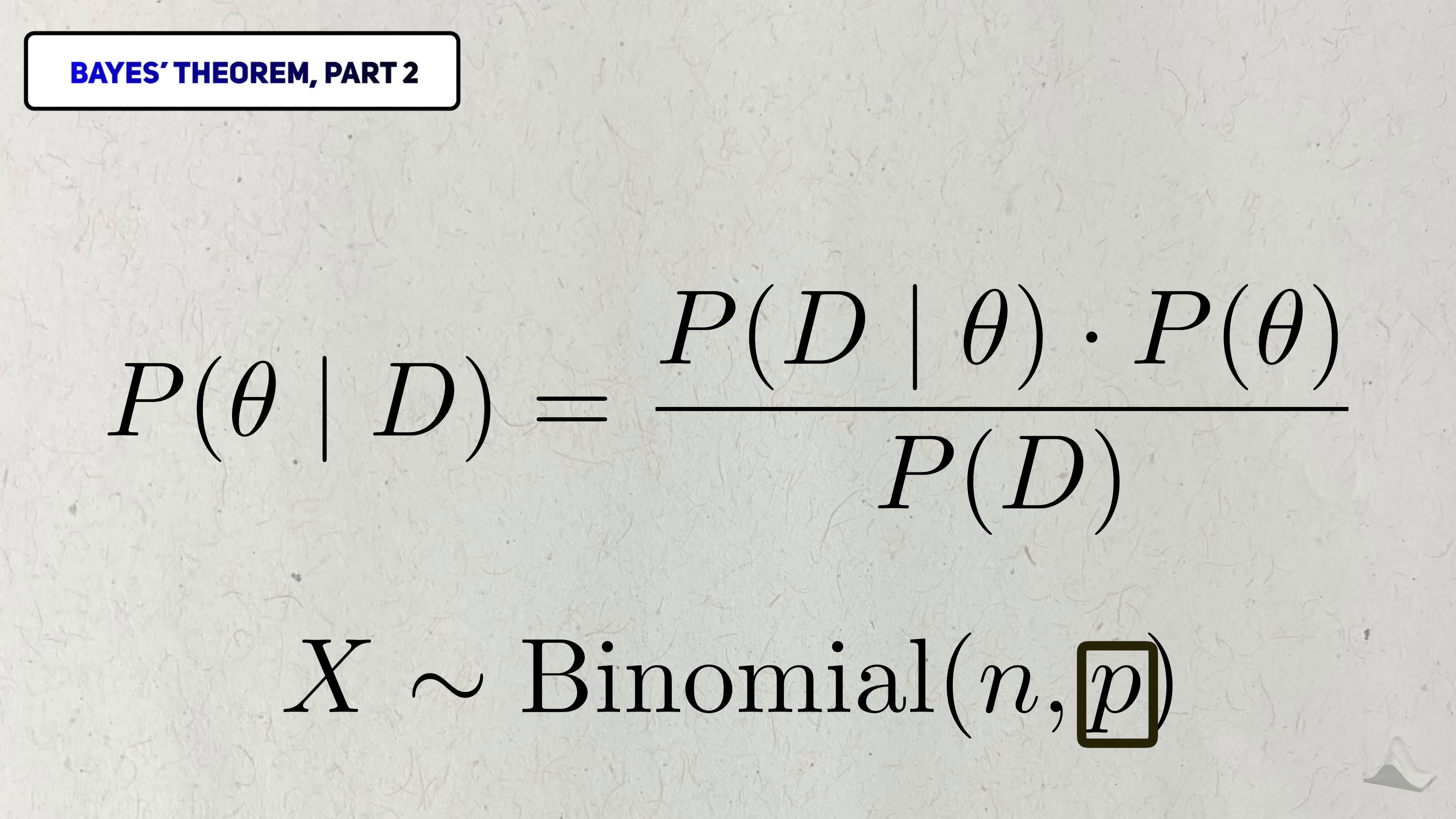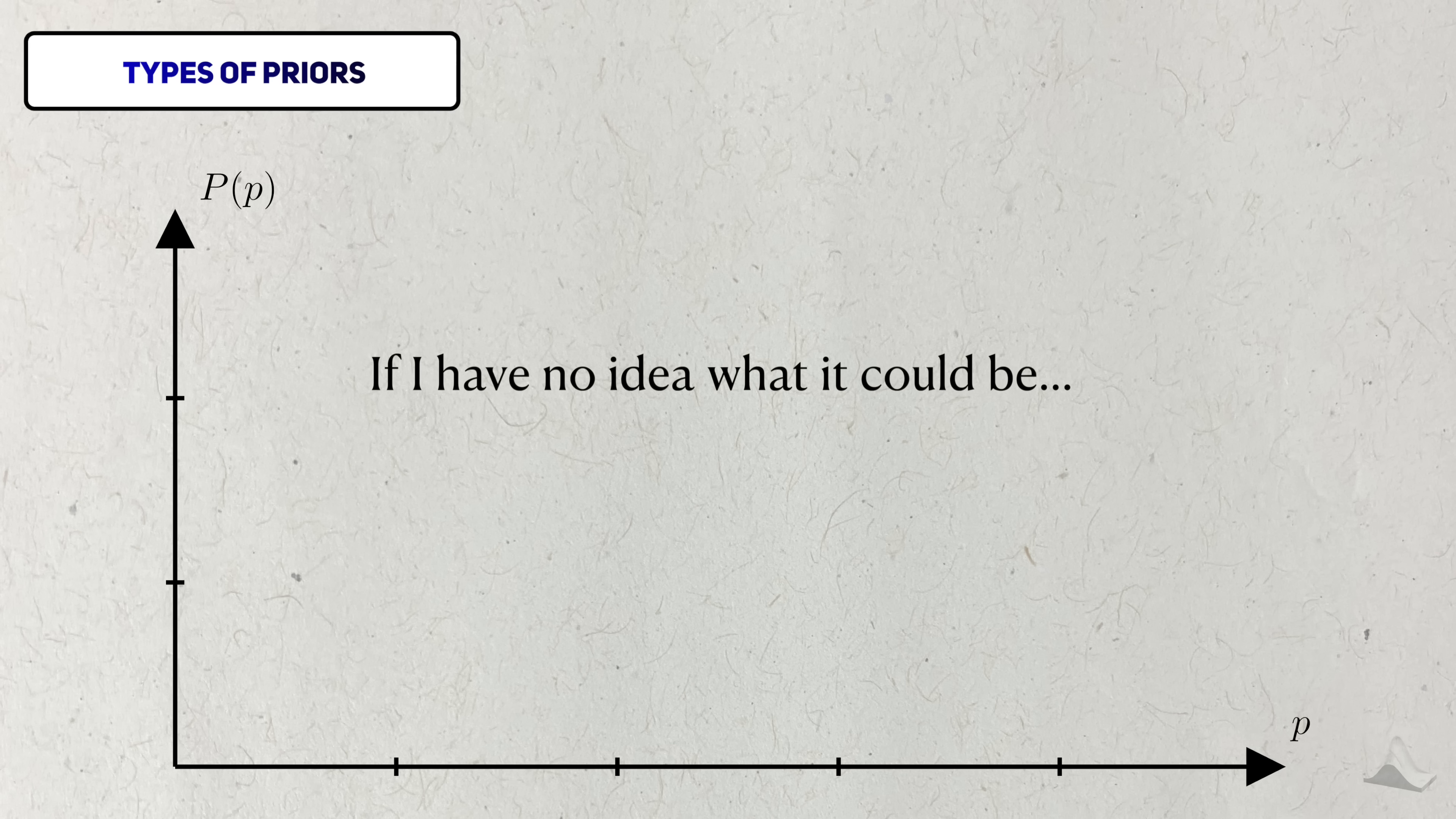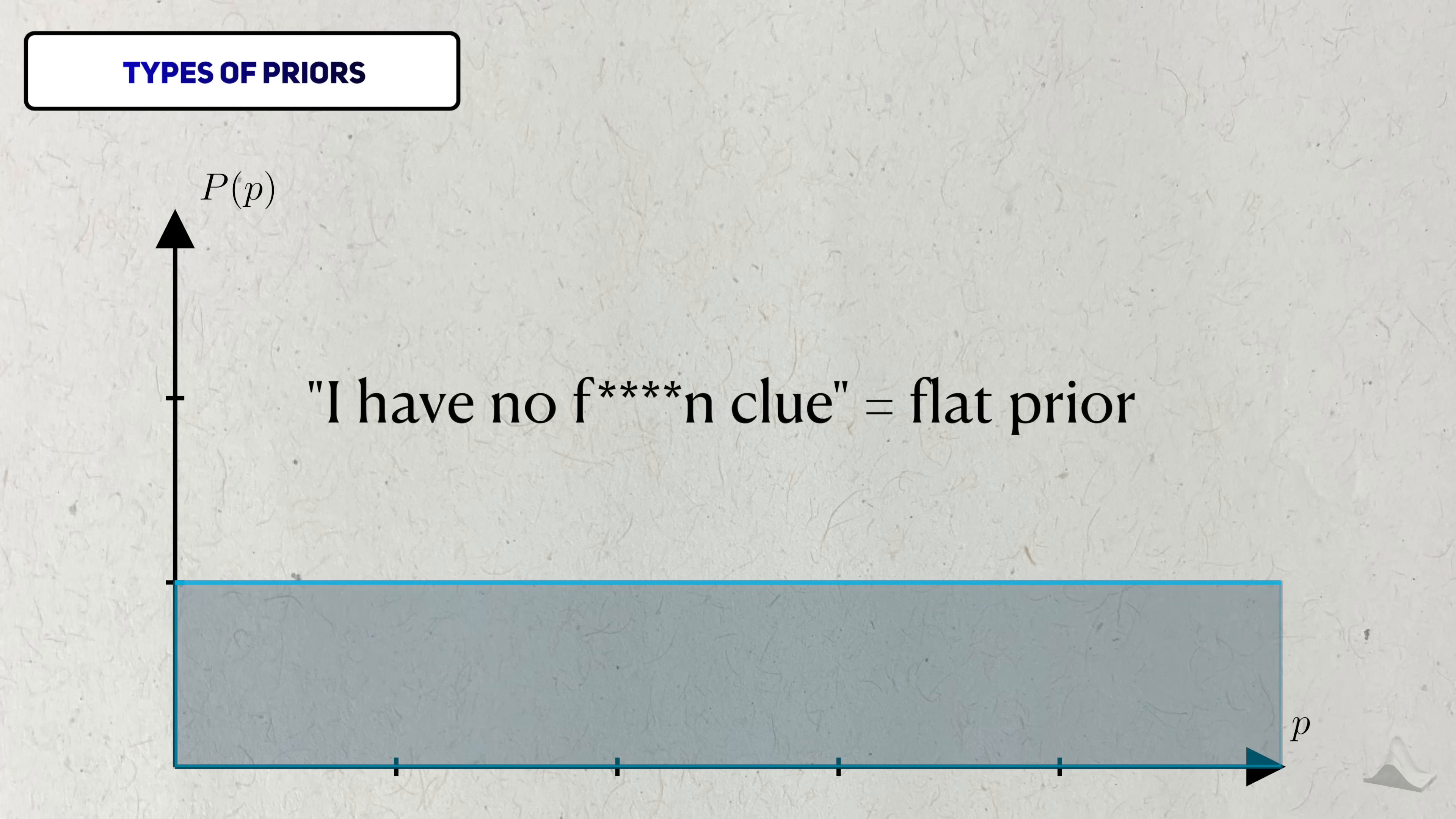Depending on the shape of the prior distribution, I can reflect different beliefs about this response rate. If I have no knowledge about what this value could be, then any value is likely as any other, and you'd represent this using a completely flat distribution. This is called an uninformative prior.